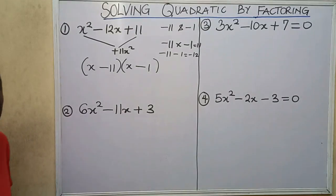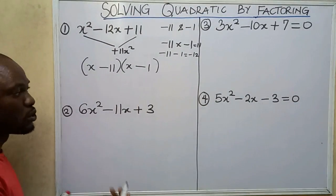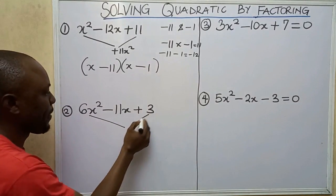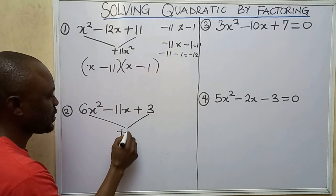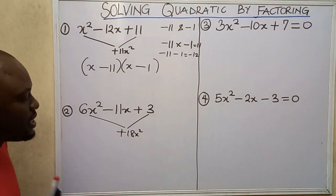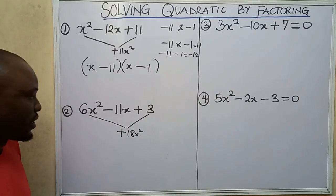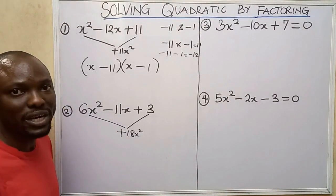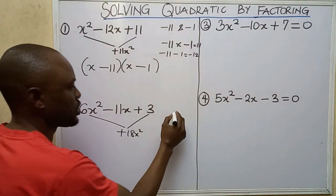Let's solve the next problem. I'll do the same thing: multiply the first term by the last term and I get plus 18x squared. The next thing is to look for two factors so that when I multiply them I get plus 18, and if I add or subtract the same factors I get minus 11.